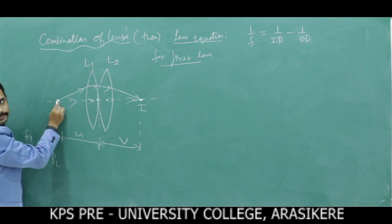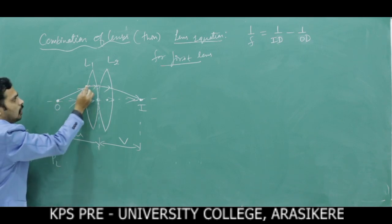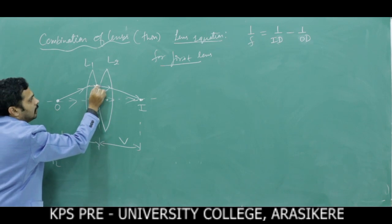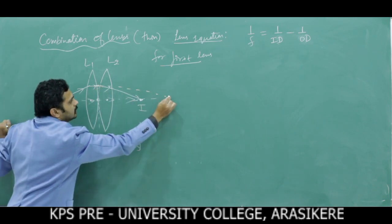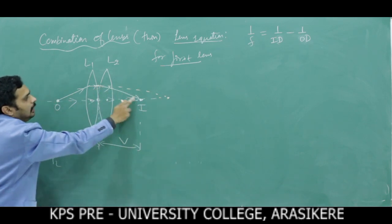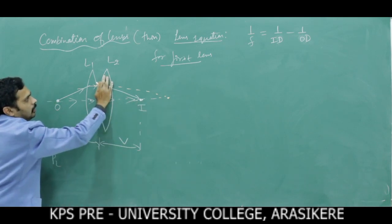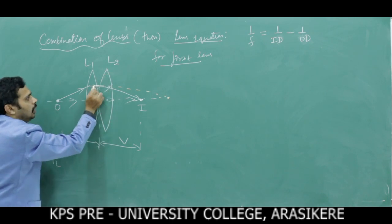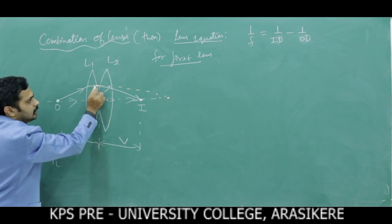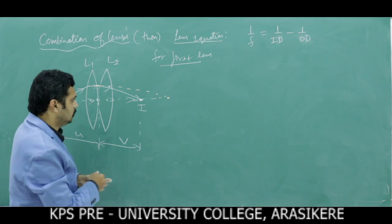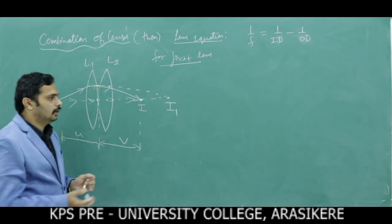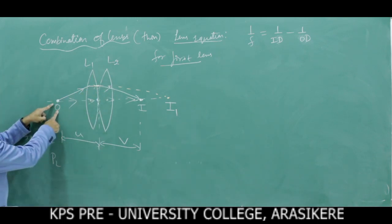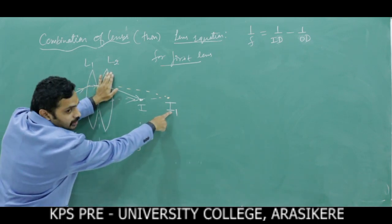In the absence of the second lens, after refraction from the first lens the light meets farther away. Therefore the image is I1. So in the absence of the second lens, for the first lens: O is the object and I1 is the image.